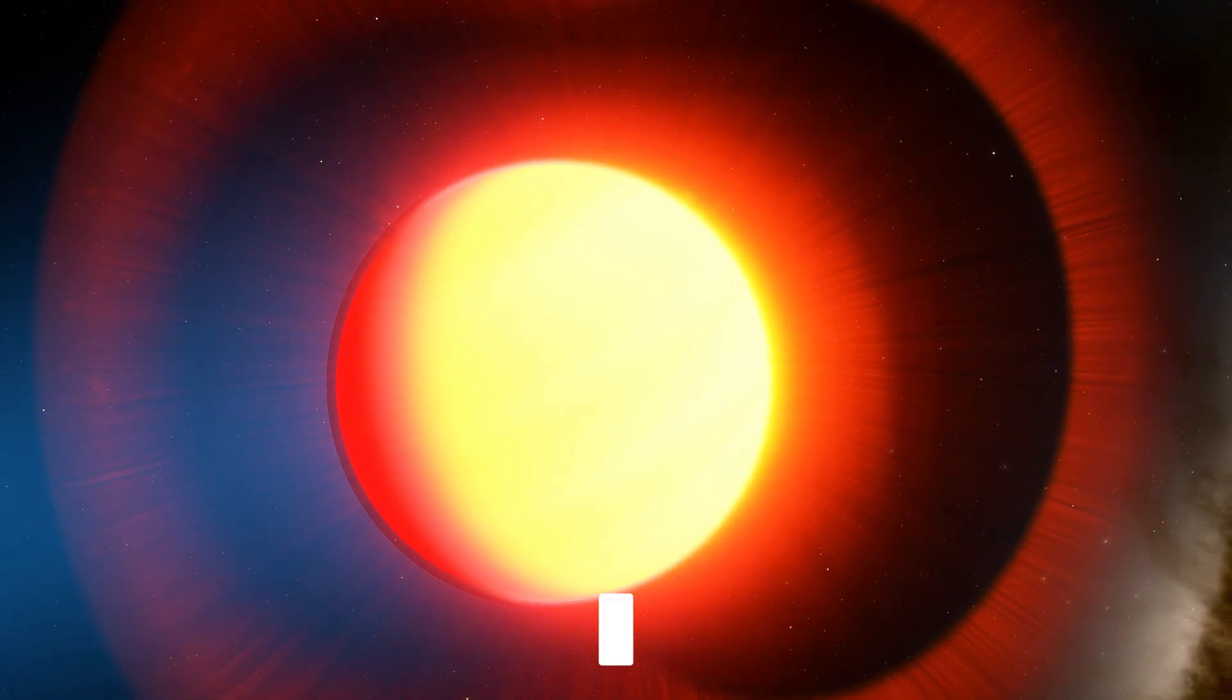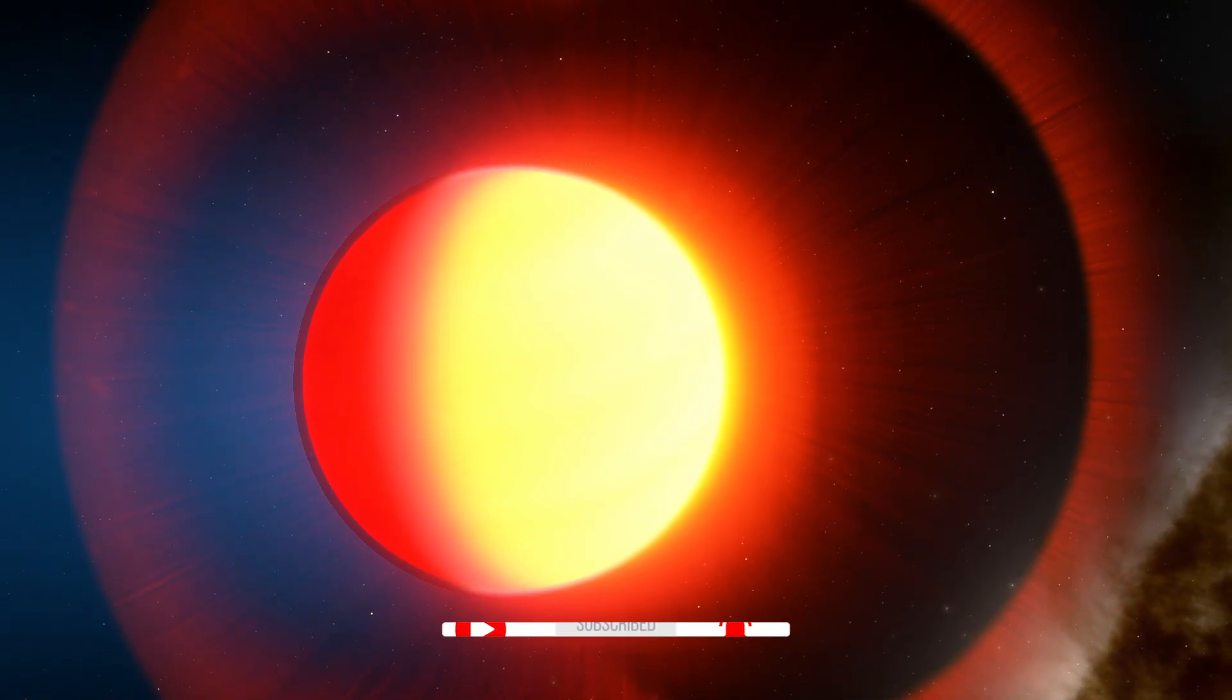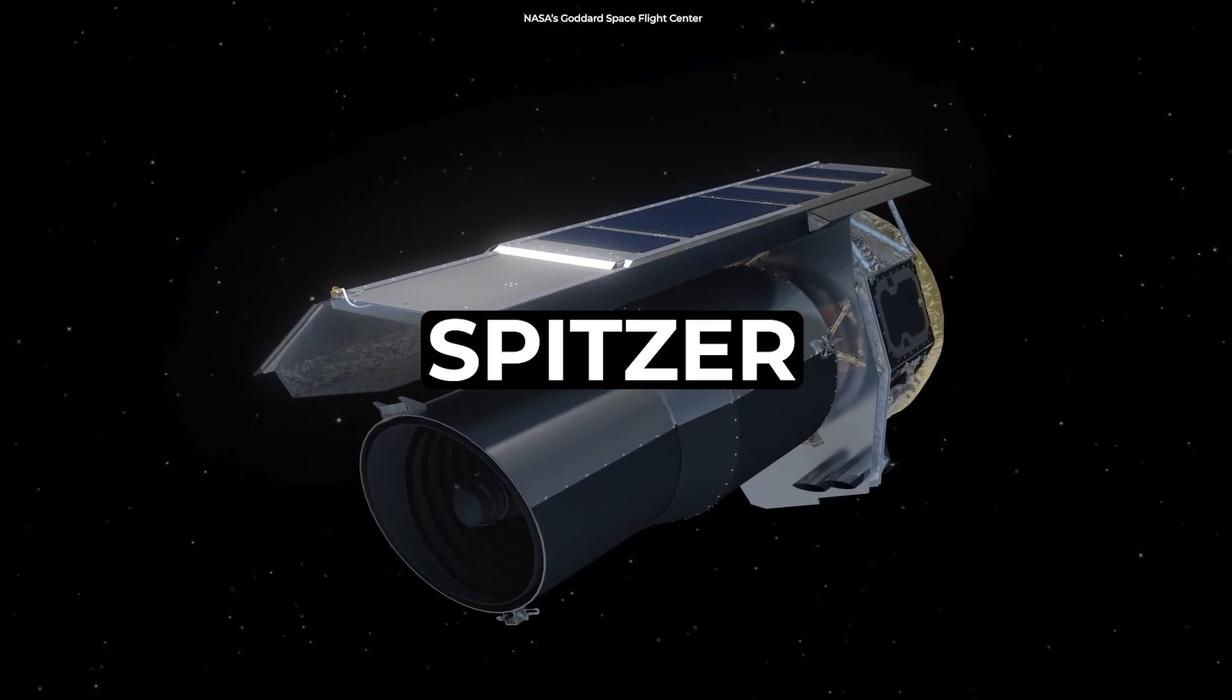The hot Jupiter also contains a substantial amount of water vapor, sodium, and potassium in its atmosphere. These ingredients were found by NASA's Hubble and Spitzer space telescopes.